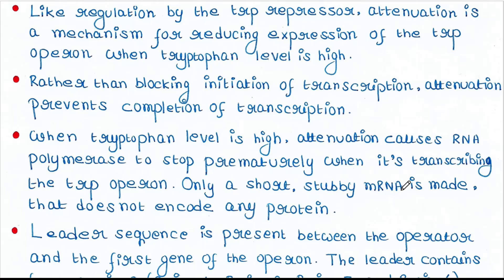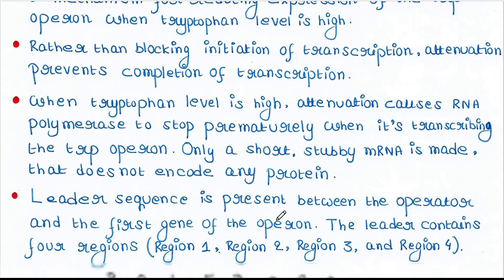Only a short, stubby mRNA is made that does not encode any protein. So when tryptophan is in the media, trp operon transcription will start but will not get finished. RNA polymerase will stop early, producing a short non-functional mRNA.